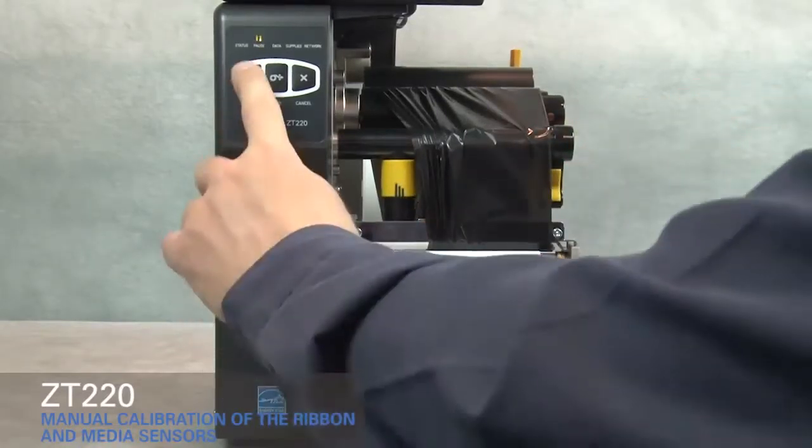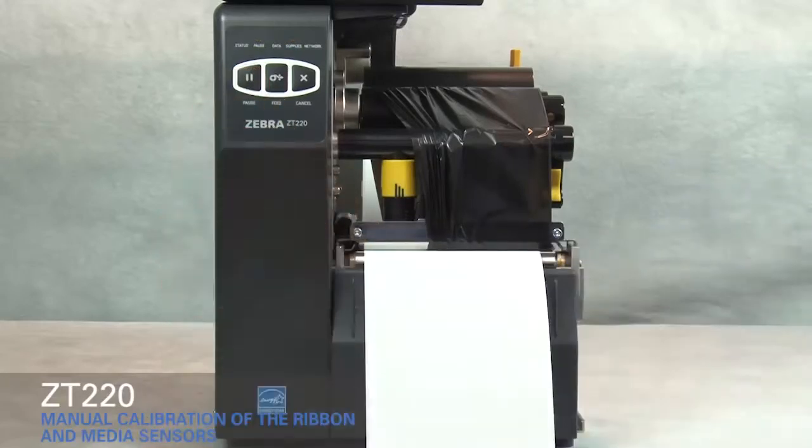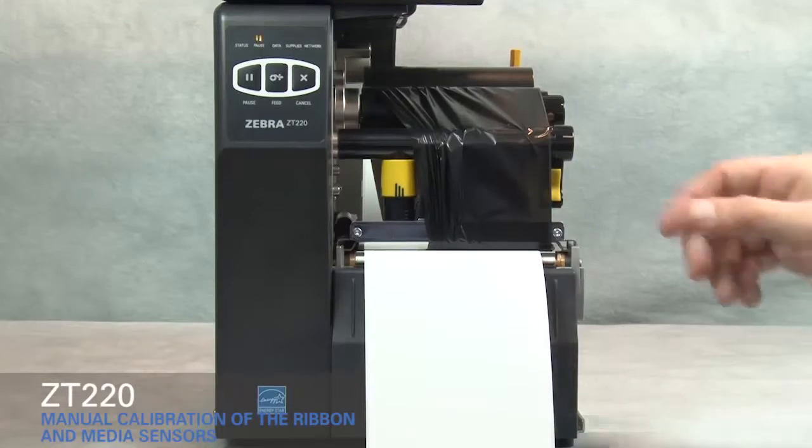Press pause to begin media calibration. The pause light turns off and the supplies light flashes yellow. The process is complete when the supplies light stops flashing and the pause light turns yellow.